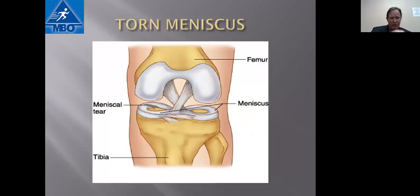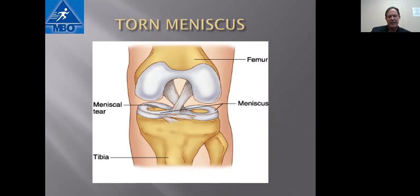The two C-shaped cartilages in the knee act like cushions, and that's what is torn. Usually it's a twisting or pivoting-type injury that causes the tearing. A small tear like this is very simple to fix — you go in and smooth it out, and there's almost no recovery involved.